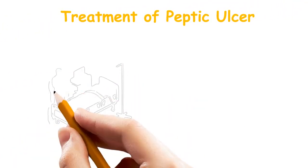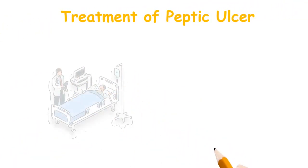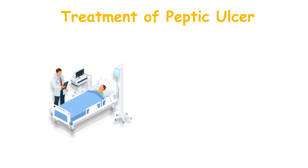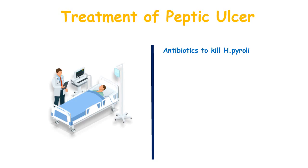Now let's discuss the treatment of Peptic Ulcer. These days we have several medications and antibiotics that are useful against Peptic Ulcer. The very first category is antibiotics, which are used for killing the microorganism Helicobacter pylori, responsible for the development of Peptic Ulcer.